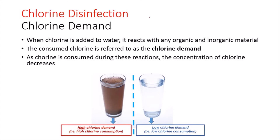Let's say I have a tank full of water and we are adding chlorine, and we have some contaminants. When we add the chlorine, it will react with these contaminants and the amount of chlorine will decrease because it reacted with these contaminants. The consumed chlorine is referred to as the chlorine demand, as chlorine is consumed during these reactions.